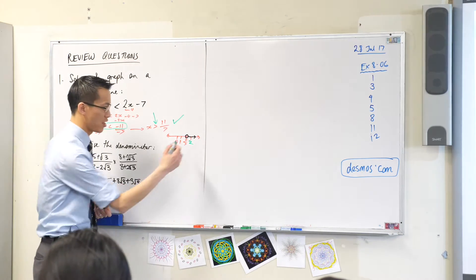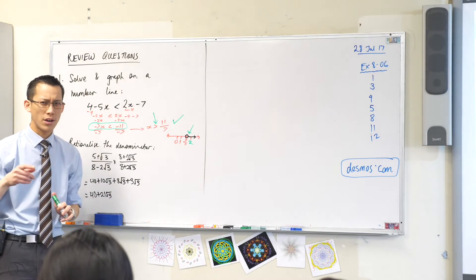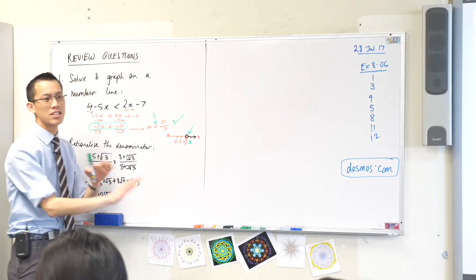Last little point to mention, this circle is hollow. Why is that? Because that number, 11 on 7, is not included.